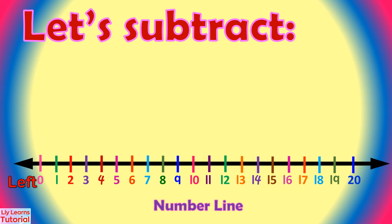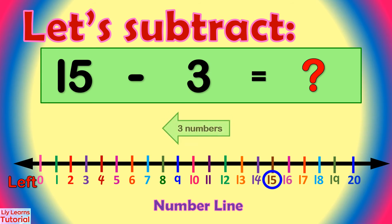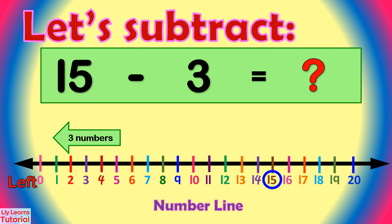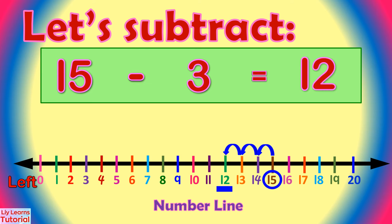To find the difference of 15 minus 3, we mark the minuend, which is 15, on the number line, and move 3 numbers to the left: 1, 2, 3. In what number did we land? We land on 12. So 15 minus 3 equals 12.